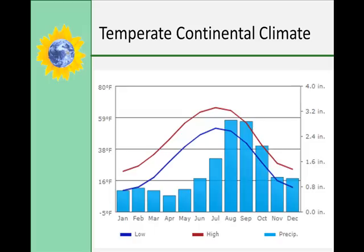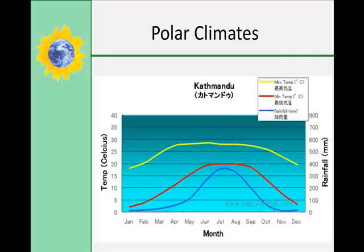Temperate continental climates include humid continental and subarctic climates. Subarctic climates have cool summers and cold winters — an example would be Anchorage, Alaska, which gets a whopping 58 degrees in August and September. Polar climates include ice cap and tundra climates. The tundra climate region stretches across northern Alaska, Canada, and Russia.